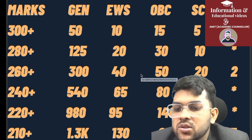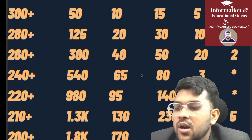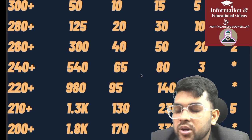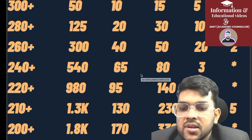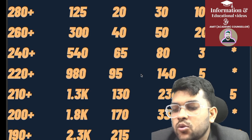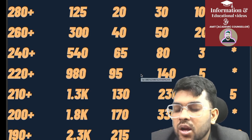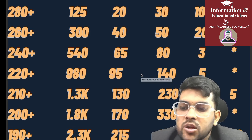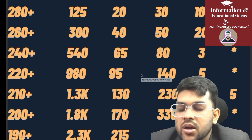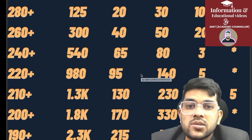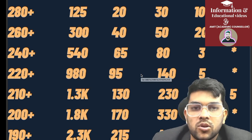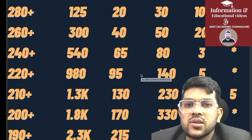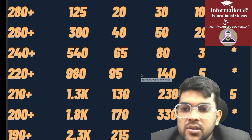For 220+ marks: General rank 980, EWS 95, OBC 140, SC rank 5. For 210+ marks: General 1,300, EWS 130, OBC 230, SC 10, ST rank 5. For 200+ marks: General rank 1,800, EWS 170, OBC 330, SC 59. The total marks of the exam are assumed to be around 360–370, as the exact total is revealed only on exam day.